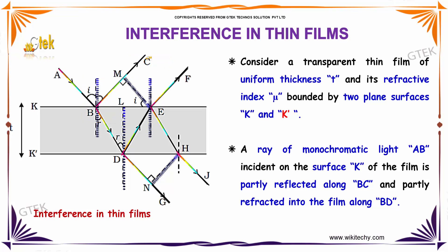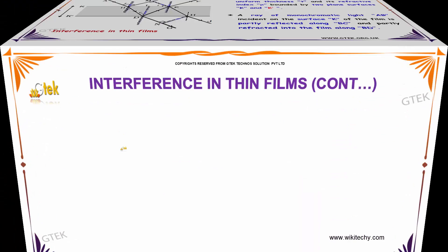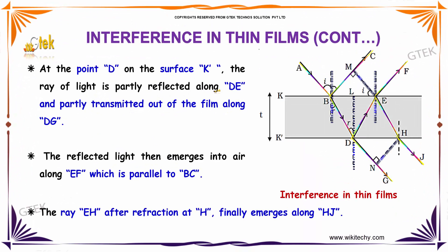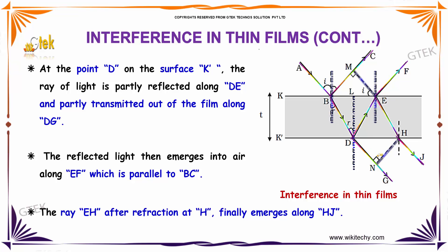From A to B to C, and it is refracted into the film as BD. At point D on the surface k', the ray of light is partially reflected along DE and partly transmitted out of the film along DG. The reflected light then emerges into air along EF, which is parallel to BC.